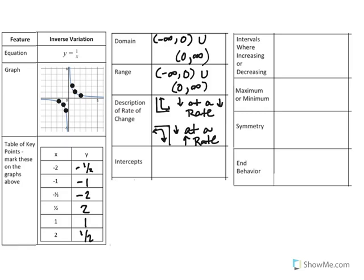The intercepts here are that there are none because of those asymptotes. Intervals where there's increasing or decreasing – there's no intervals of increase. And for the intervals of decrease, it's going to decrease over our whole domain.